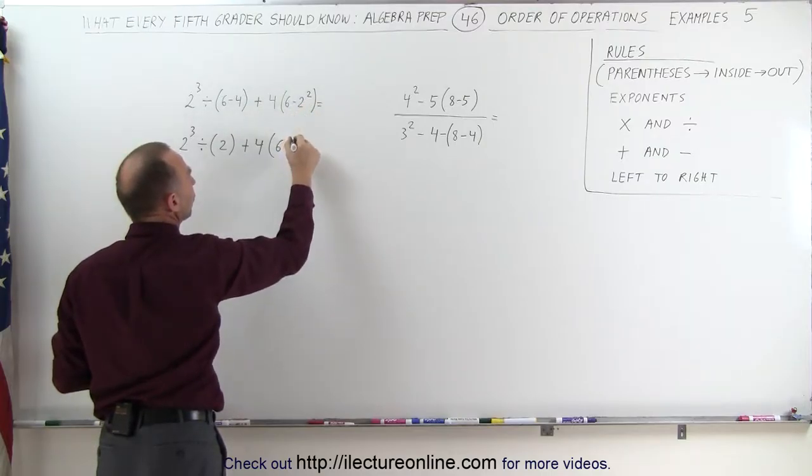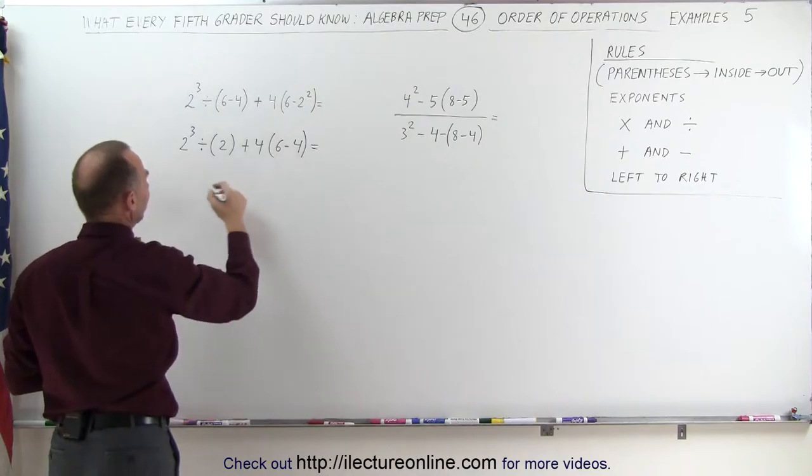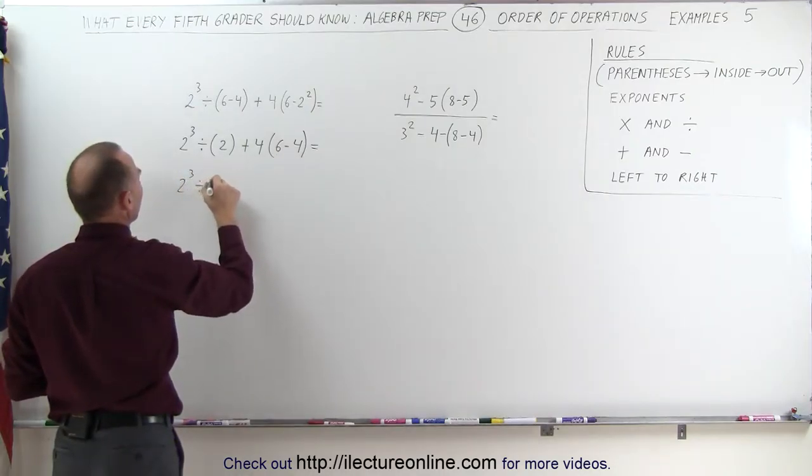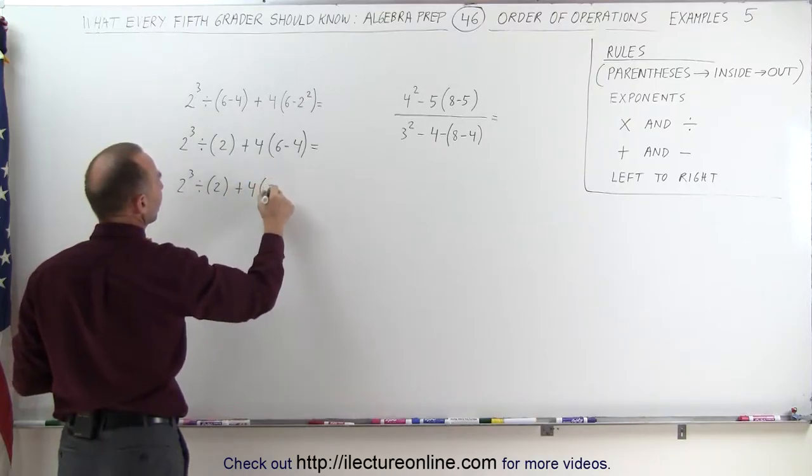2 to the second power is 2 times 2 which is 4. Now we can simplify what's here. This is 2 cubed divided by 2 plus 4 times 6 minus 4 is 2.